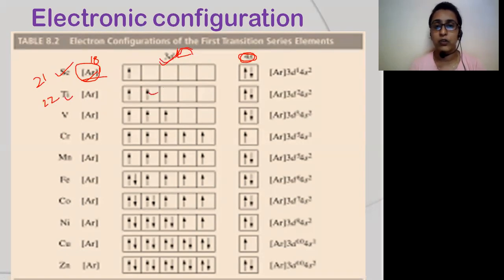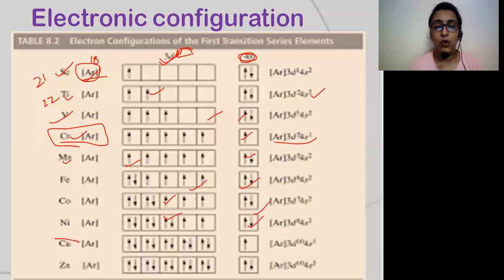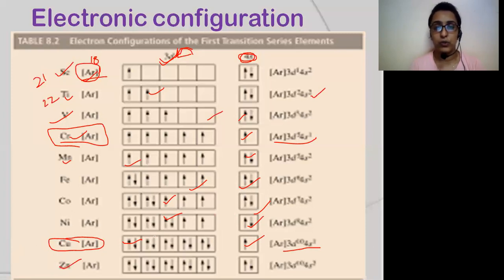Titanium is [Ar] 3D2 4S2. Vanadium is [Ar] 3D3 4S2. Chromium expected is 3D4 4S2, but actual is 3D5 4S1 — chromium shows anomalous behavior which we will discuss later. Manganese is 3D5 4S2. Iron is 3D6 4S2. Cobalt is 3D7 4S2. Nickel is 3D8 4S2. Copper also shows abnormal behavior — expected is 3D9 4S2, but actual is 3D10 4S1. Zinc is 3D10 4S2.